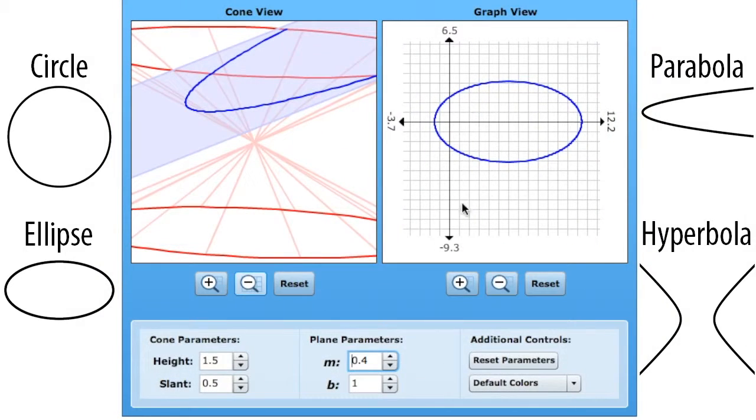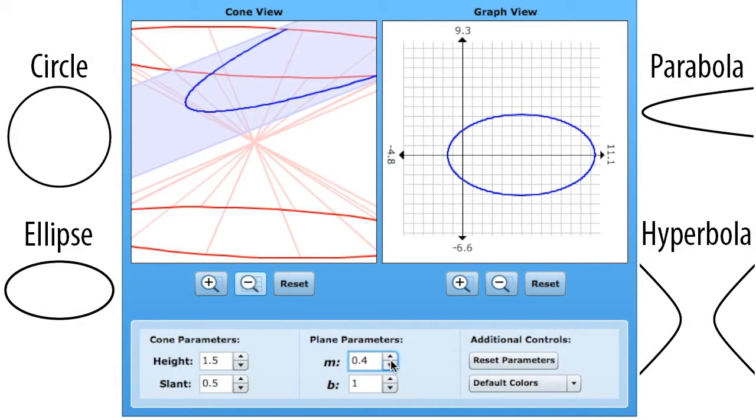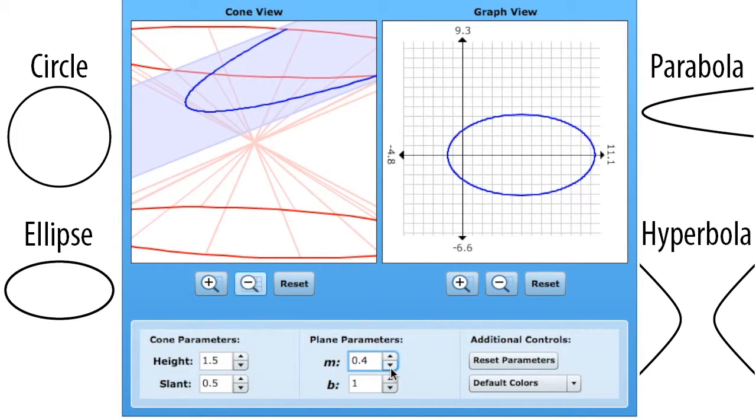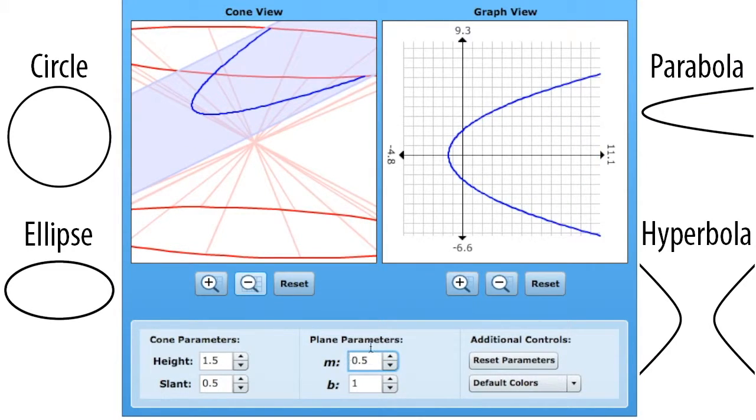Let's move the slant of the cone down to 0.5, and let's see what happens. In order for this to be a parabola, let's see if I need to move this to 0.5 as well. And that's true. This is a parabola. If I make it be a little bit less steep, then it becomes an ellipse again. 0.5, it's a parabola. Smaller, it's an ellipse.